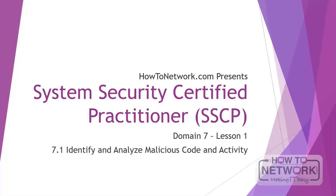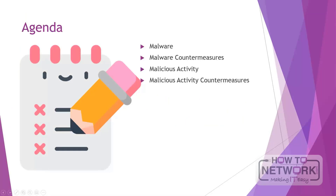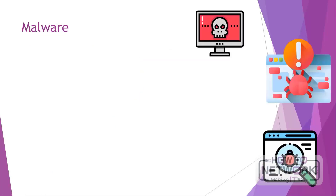Hello and welcome to another lesson in the System Security Certified Practitioner course. In this lesson we'll be covering topic 7.1: identify and analyze malicious code and activity. On the agenda today we have malware, malware countermeasures, malicious activity, as well as malicious activity countermeasures.